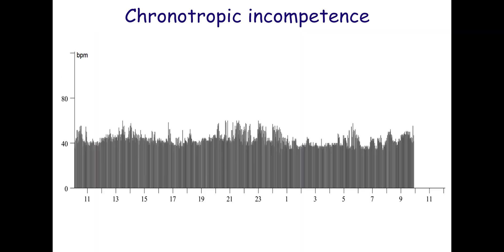Ambulatory ECG monitoring shows a slow heart rate throughout the day in patients with chronotropic incompetence. There is no significant increase in heart rate during exercise. The mean and maximum heart rates are low.